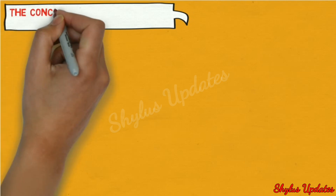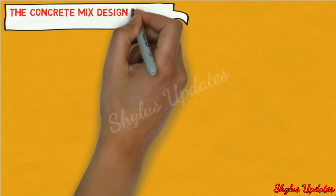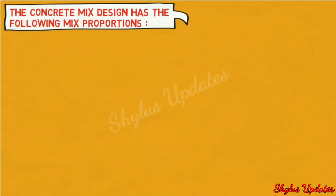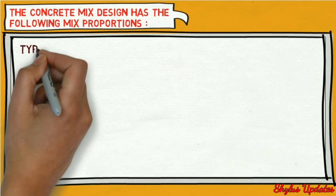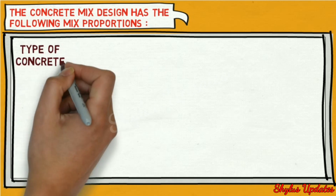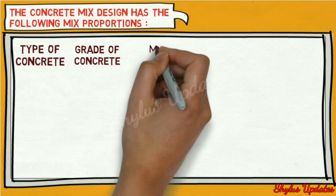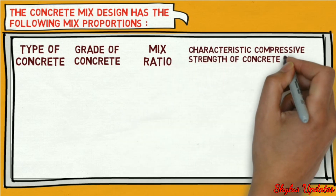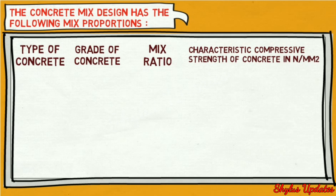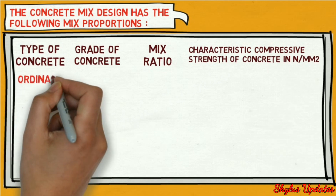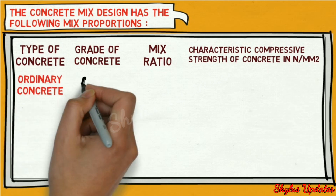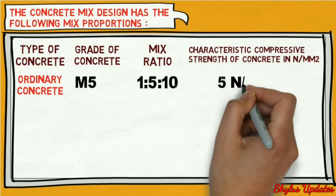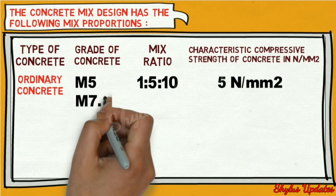As per IS 456:2000, the concrete mix design has the following mix proportions: type of concrete, grade of concrete, mix ratio, and characteristic compressive strength of concrete in Newton per mm square. The categories include ordinary concrete mix, standard concrete mix, and high strength concrete.